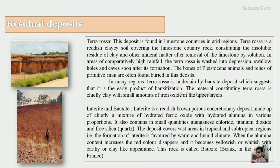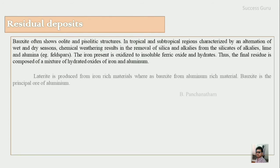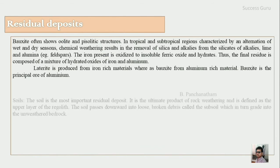When the alumina content increases, the red color disappears and the rock becomes yellowish or whitish with an earthy or clay-like appearance; this is called bauxite, which got its name from its first occurrence at Les Baux in southern France. Bauxite often shows oolitic and pisolitic structure. In tropical and subtropical regions characterized by alternation of wet and dry seasons, chemical weathering results in removal of silica, alkalis, and lime from minerals like feldspars. The iron present is oxidized to insoluble free oxide and hydrate, so the final residue is composed of a mixture of hydrated oxides of iron and alumina. Laterite is produced from iron-rich material, whereas bauxite is from alumina-rich material, and bauxite is the principal ore of aluminium.